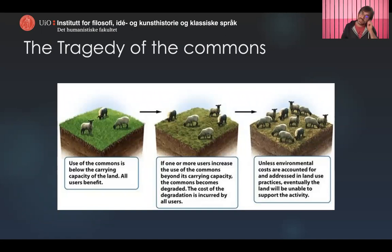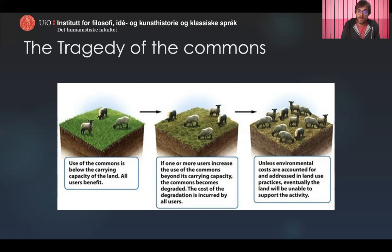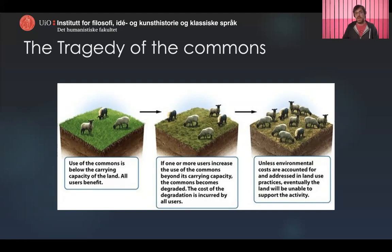Why is this tragic? At the beginning, you're below the carrying capacity of the land, all users benefit from the commons, everyone's cows can graze there. But the tragedy arises because I have an incentive to put one more of my sheep on the commons — there's enough green grass after all, and one more won't hurt. But when more users increase the use of the common, it becomes degraded, the grass gets worse and worse, and the cost is incurred by everyone.